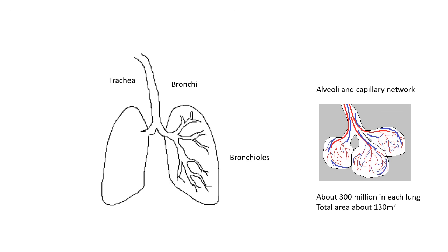At the end of these bronchioles, we have lots and lots of these little balloons called alveoli. There's about 300 million of them in each lung — these tiny little balloons. So they have a very, very large total surface area, about 130 metres squared, apparently. Very large surface area, so lots of diffusion can happen.